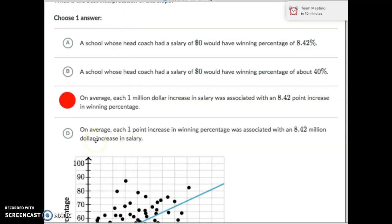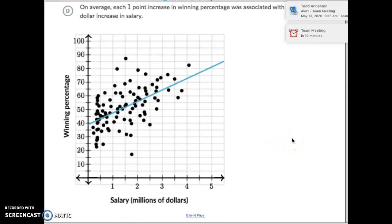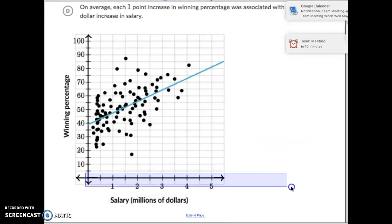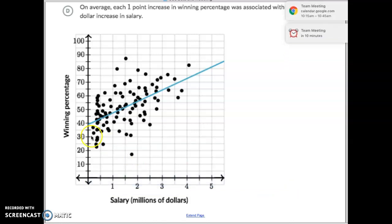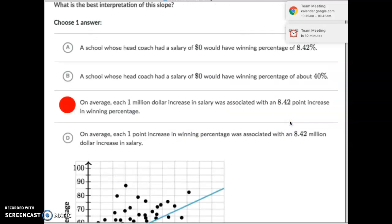And then just read the last one to verify. On average, each one-point increase in winning percentage is associated with an 8 million-dollar increase. Well, look at this. They don't even have 8 million dollars on here. 8 million would be out to about here. So they're saying that a 1% increase right to about there. So they're saying the graph would have gone kind of like that right there. That's not what happens.